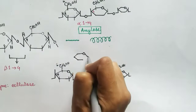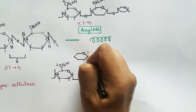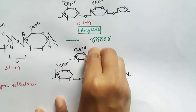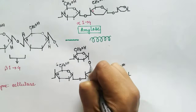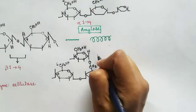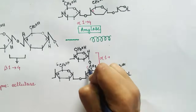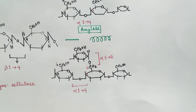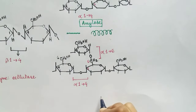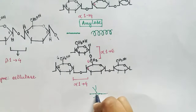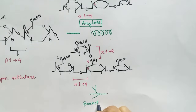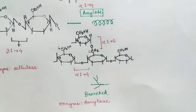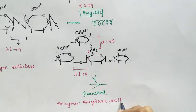In amylopectin the polysaccharide has alpha 1-4 glycosidic bonds between alpha glucose units, and also bonds between the sixth carbon of one glucose and the anomeric carbon of another alpha glucose, making it a branched structure. This additional glycosidic bond is called the alpha 1-6 glycosidic bond. So this branched structure of starch — amylopectin — has two types of glycosidic bonds: alpha 1-4 and alpha 1-6. It is broken by amylase and maltase enzymes.